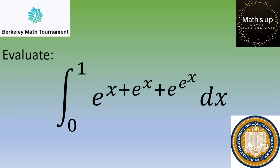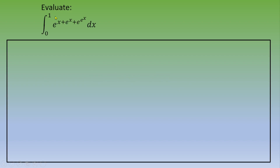First, we are going to try to modify this quantity. We are going to recall a power formula: e to the a plus b equals e to the a times e to the b. If you apply this formula to this exercise, then you end up with the following.